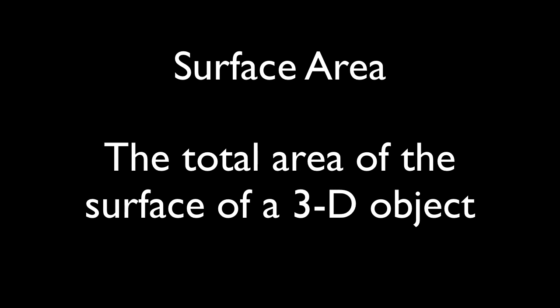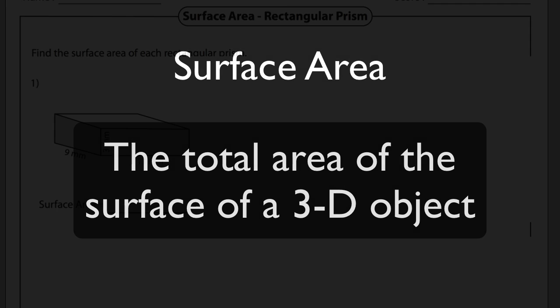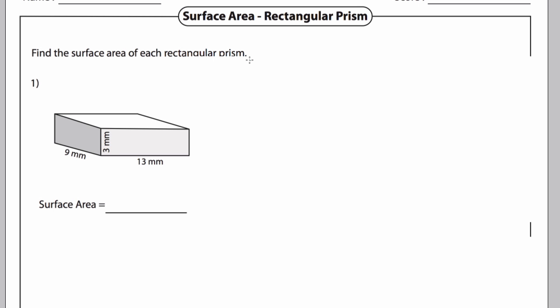We're going to start by talking about surface area, which is the total area of the surface of a 3D object. Here I have a rectangular prism with dimensions of 9, 3, and 13 millimeters.